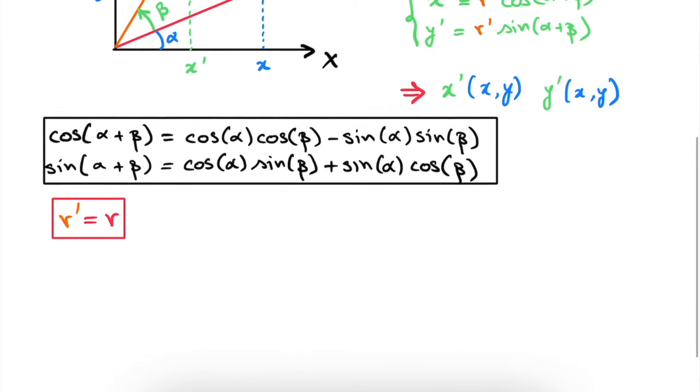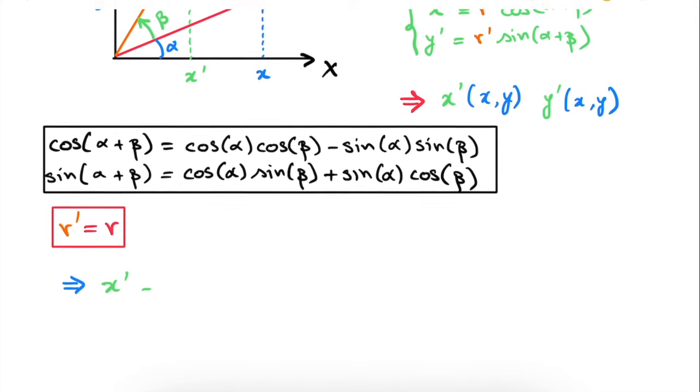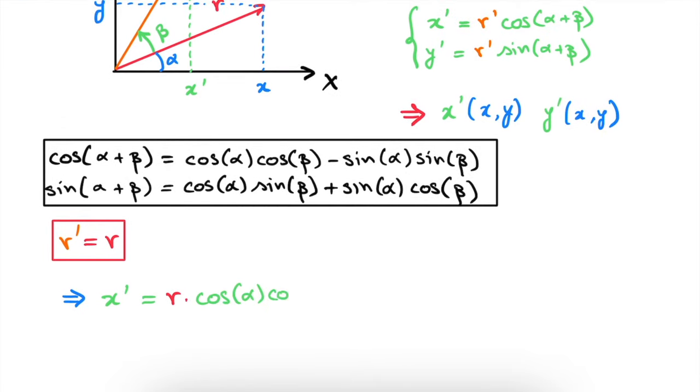We can now use these two pieces of information to rewrite our x and y prime. We can write that x prime is r times cosine of alpha times cosine of beta minus r times sine of alpha times sine of beta. Y prime is equal to r times cosine of alpha times sine of beta plus r times sine of alpha times cosine of beta.